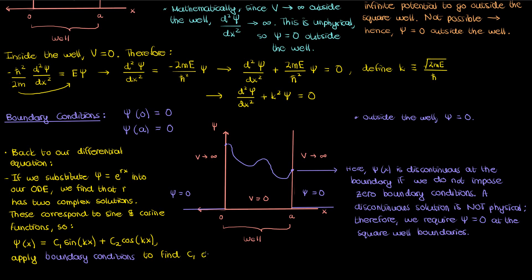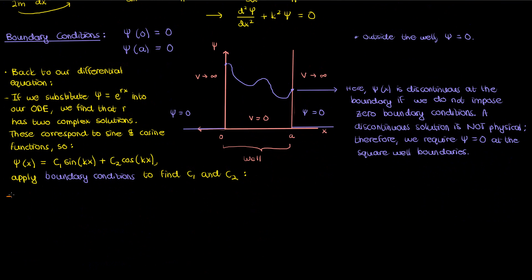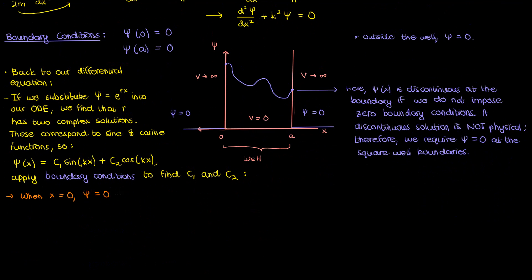Now let's go ahead and determine our c1 and c2. We know that when x is 0 small psi is also 0, so plugging that in leaves us c1 times sine 0 which is 0 plus c2 times cosine 0 which is 1, so therefore c2 must be 0.